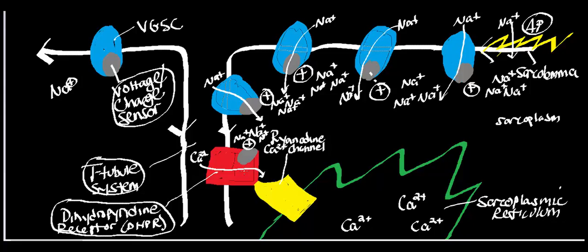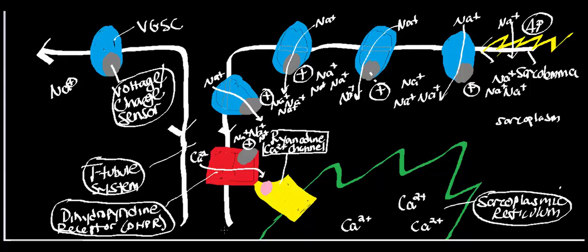In skeletal muscle, the dihydropyridine receptor is coupled to another type of calcium channel referred to as the ryanodine calcium channel. The ryanodine calcium channel is located in the membrane of the sarcoplasmic reticulum — that's this organelle right there. The dihydropyridine receptor allows calcium through and puts the calcium in position to activate another type of voltage sensor on the ryanodine calcium channel, but this one is sensitive to calcium instead. When calcium moves through the DHP receptor and activates the ryanodine calcium channel, all this calcium leaves the sarcoplasmic reticulum through the ryanodine calcium channel.